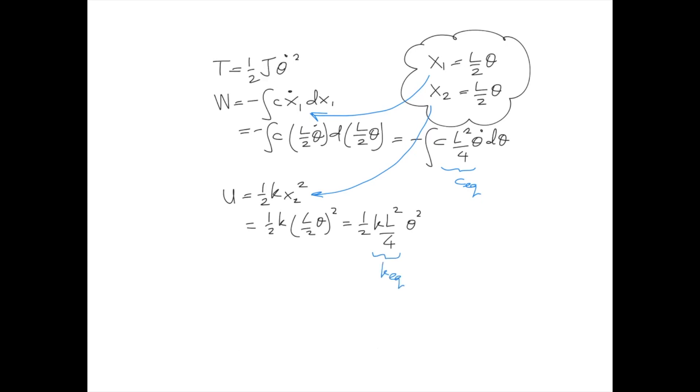Back to the kinetic energy, the second mass moment of inertia equivalent is J. Therefore the equation of motion is simply J equivalent theta double dot plus C equivalent theta dot plus K equivalent theta equals to zero.